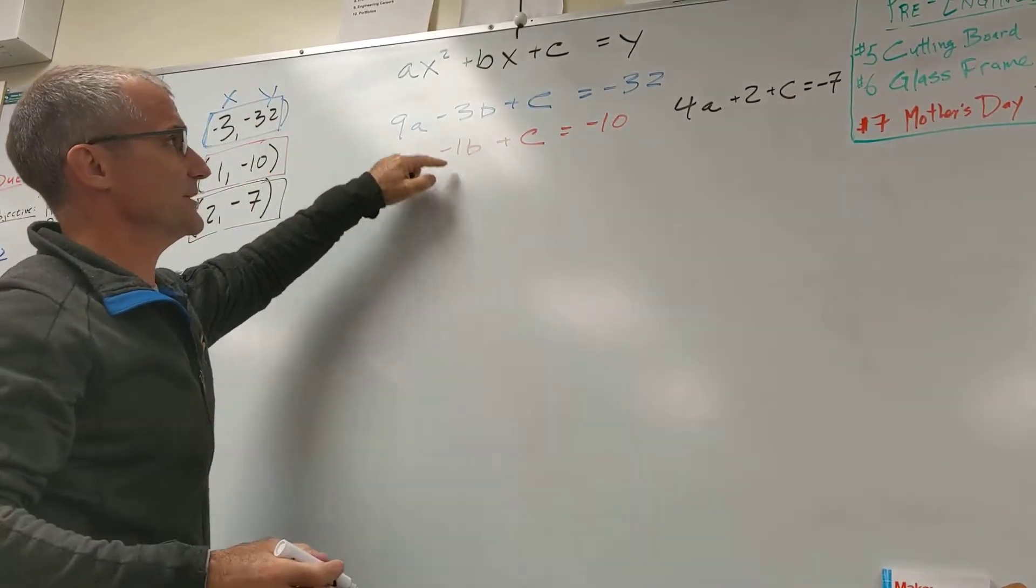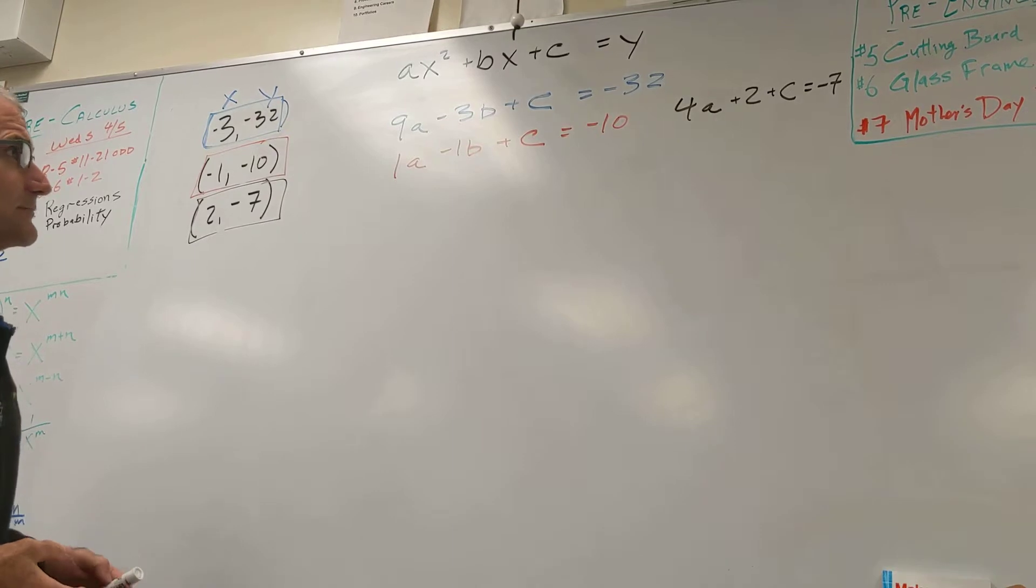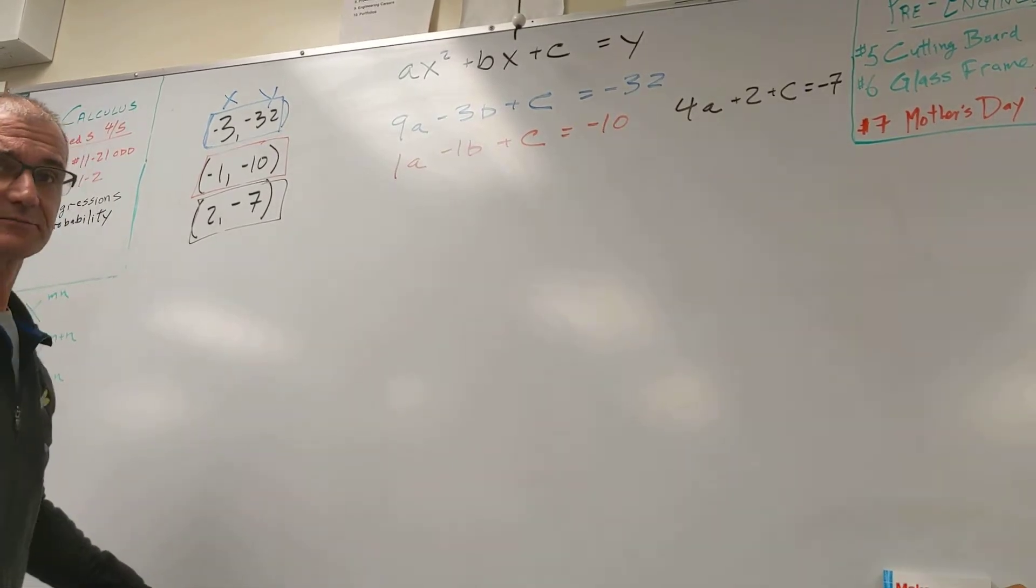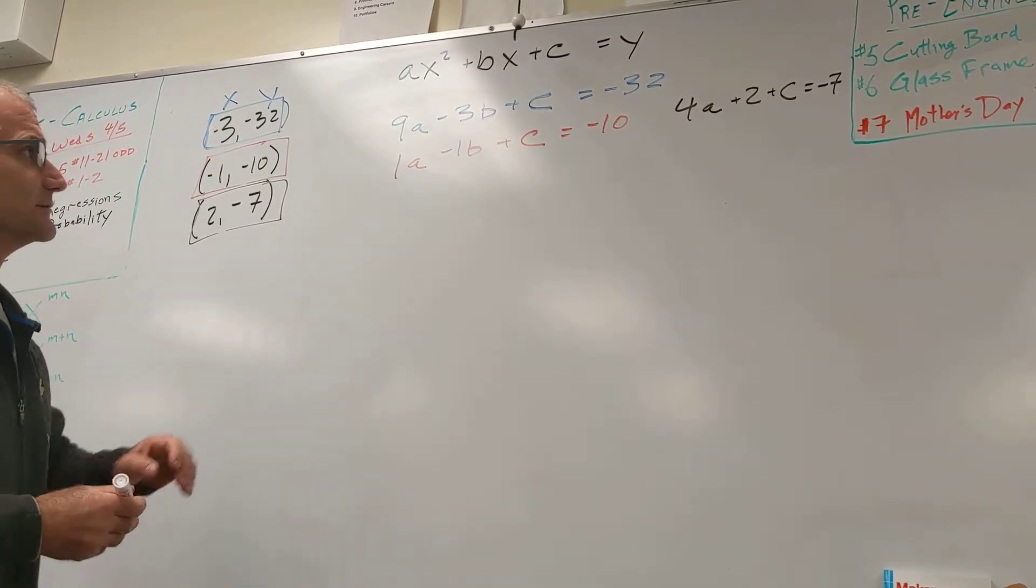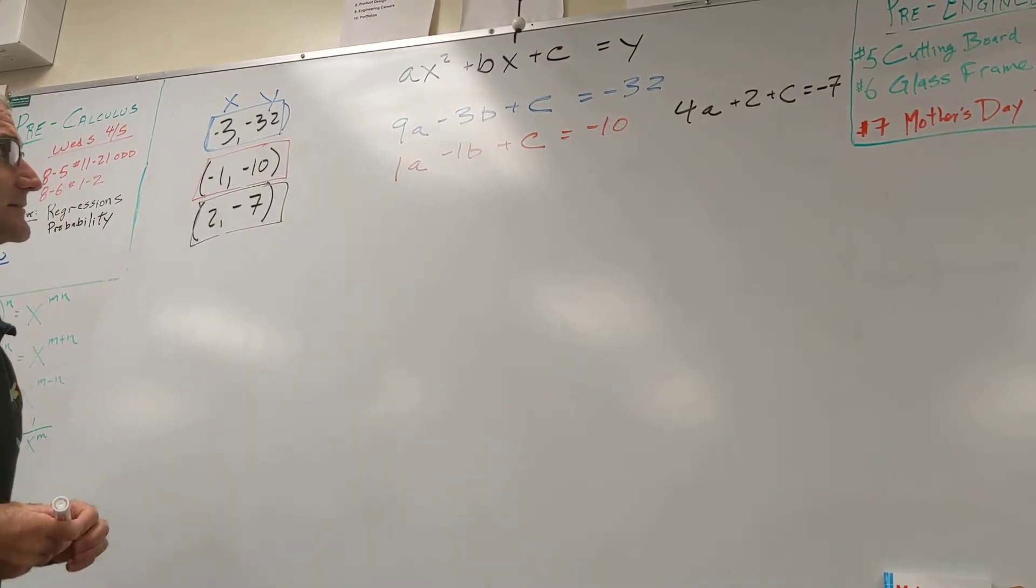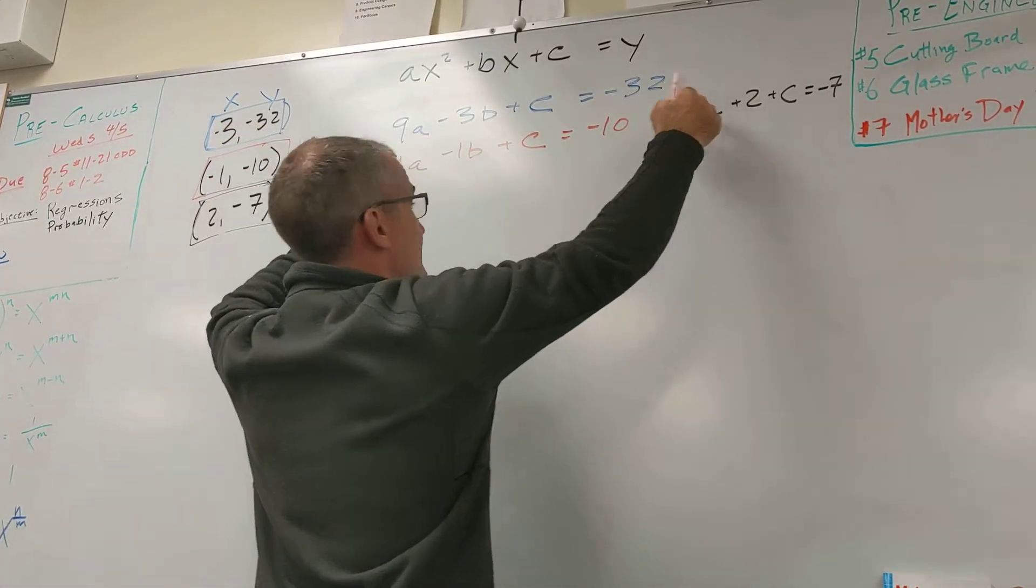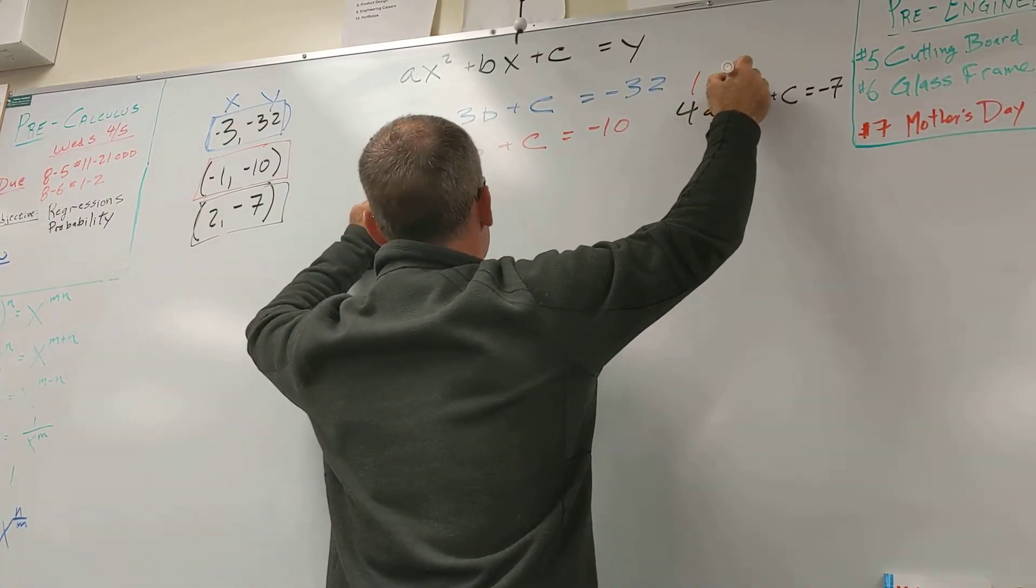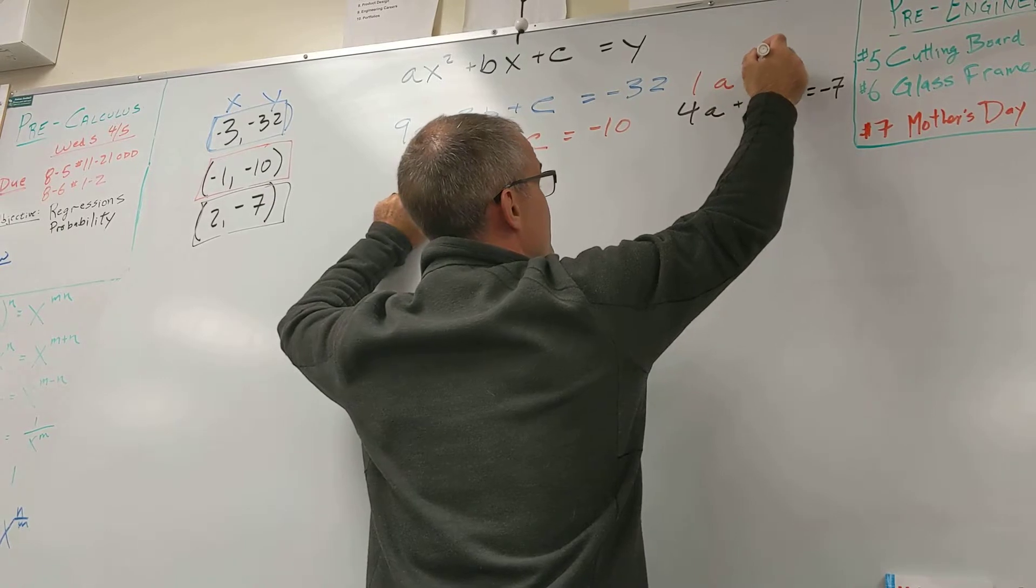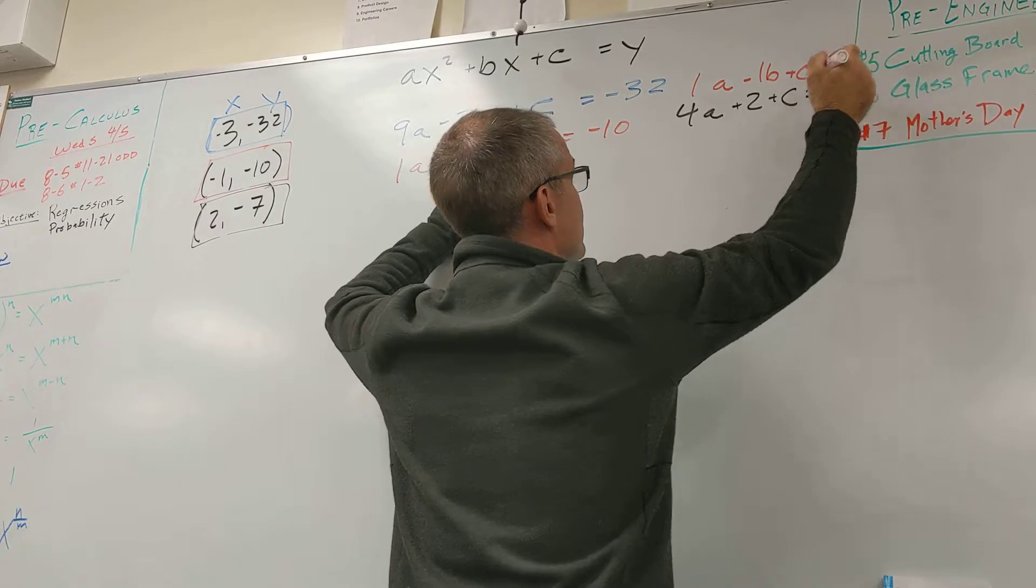And then I'm going to rewrite one of my first ones right over that one. So which one do you want to rewrite? Sam, which one do you want to rewrite? Blue or red? The red one. So I'm just going to rewrite the red one up here. 1a minus 1b plus c equals negative 10.